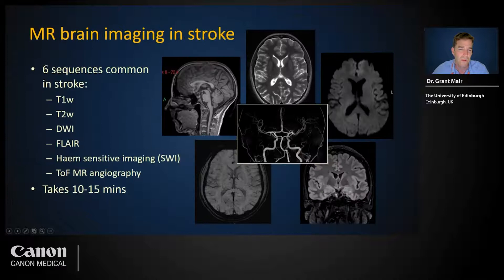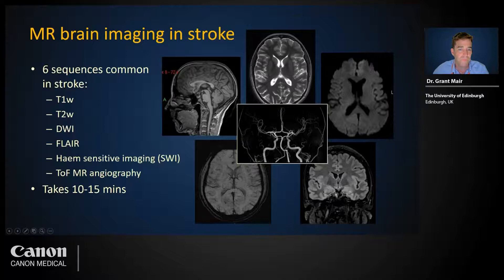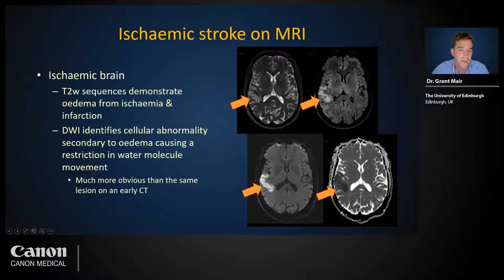MR brain imaging for stroke commonly includes six standard sequences to identify ischemic brain changes, haemorrhage, and arterial obstruction. Since each imaging sequence must be acquired independently, the whole process can take over 10 minutes; some centers use more focused stroke protocols to reduce time. On MRI, ischemia appears bright on T2-based sequences — but these appearances do not appear immediately; like CT, they rely on a net water increase and only become visible after a few hours. DWI and its ADC counterpart are sensitive for cytotoxic edema, the very early change before any net gain in water, so DWI abnormalities are clearly visible within the first few minutes after ischemic stroke onset.